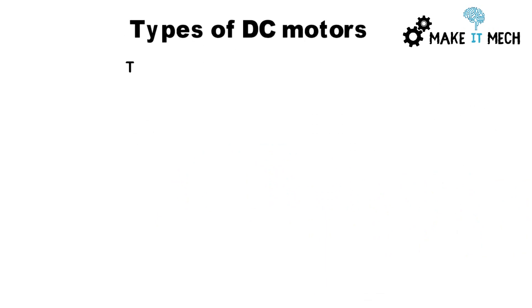Types of DC motors. There are four main types of DC motors: permanent magnet DC motors, series DC motors, shunt DC motors, and compound DC motors.